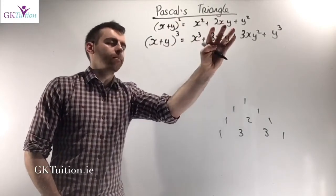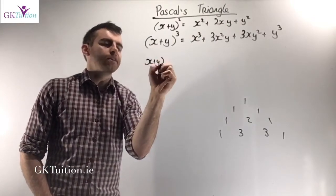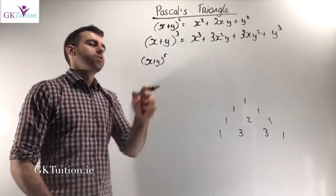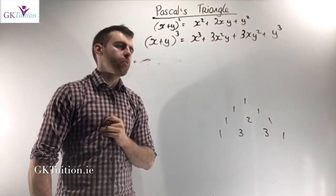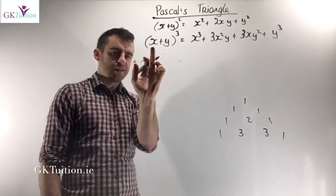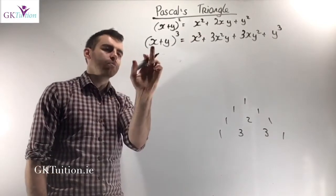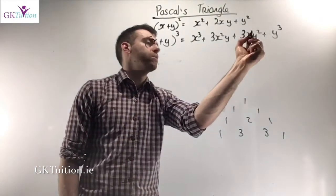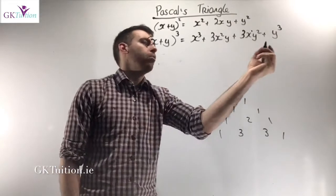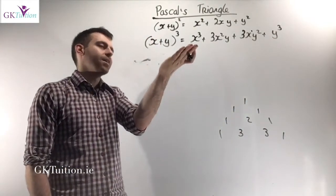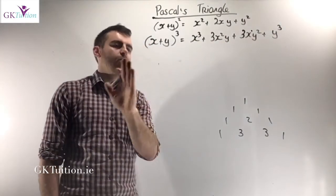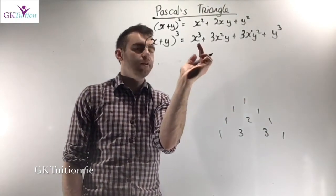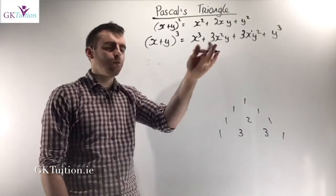So if I asked you to expand x plus y to the power of 3, the first term will be x to the power of 3, the second term x to the power of 2, the third term x to the power of 1, and the fourth term x to the power of 0. So x decreases: x cubed, x squared, x, then no x's at all. The second variable does the opposite — the last term is y cubed, then y squared, then y to the power of 1, then y to the power of 0.